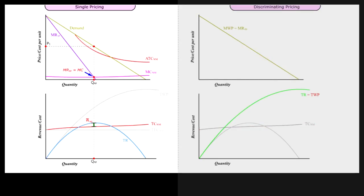Observation 2: The maximum profit output QSP of the single pricing monopoly is too low to exploit the maximum efficiency output, where P is equal to MC of a declining ATC at QSP2.